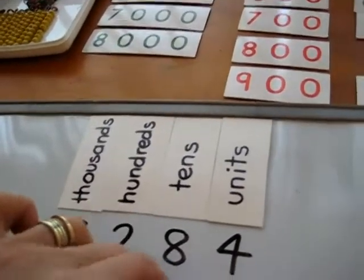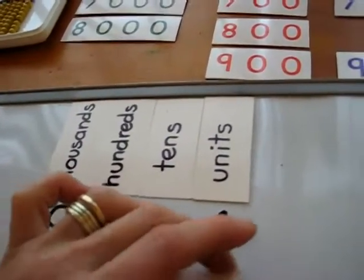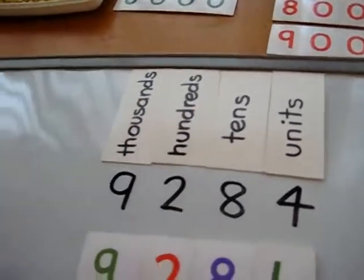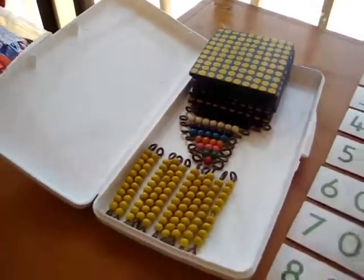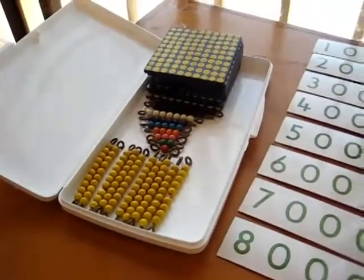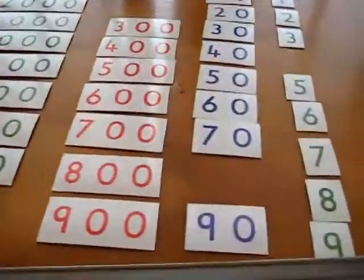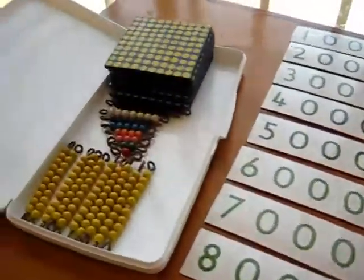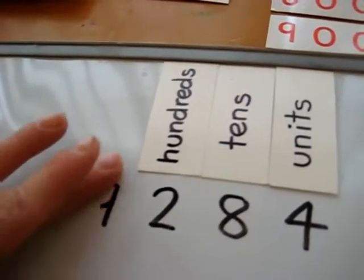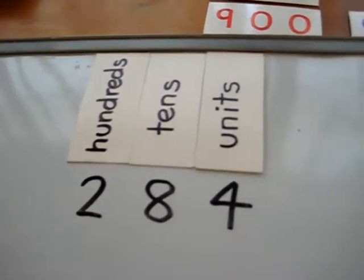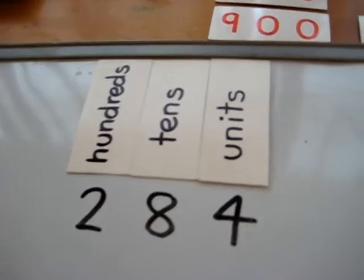To help him to visualize it a little better, we also have our little rods here and beads and our little hundreds boards. So as you can see, there's only hundreds. I don't have the thousands. So we're going to take off the thousands here. And I give him a number, 284.